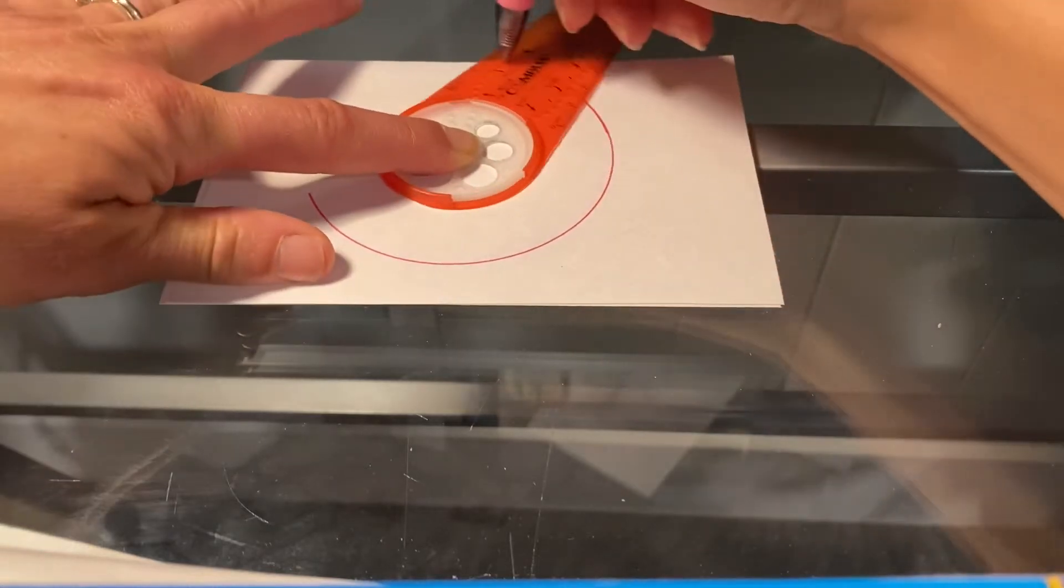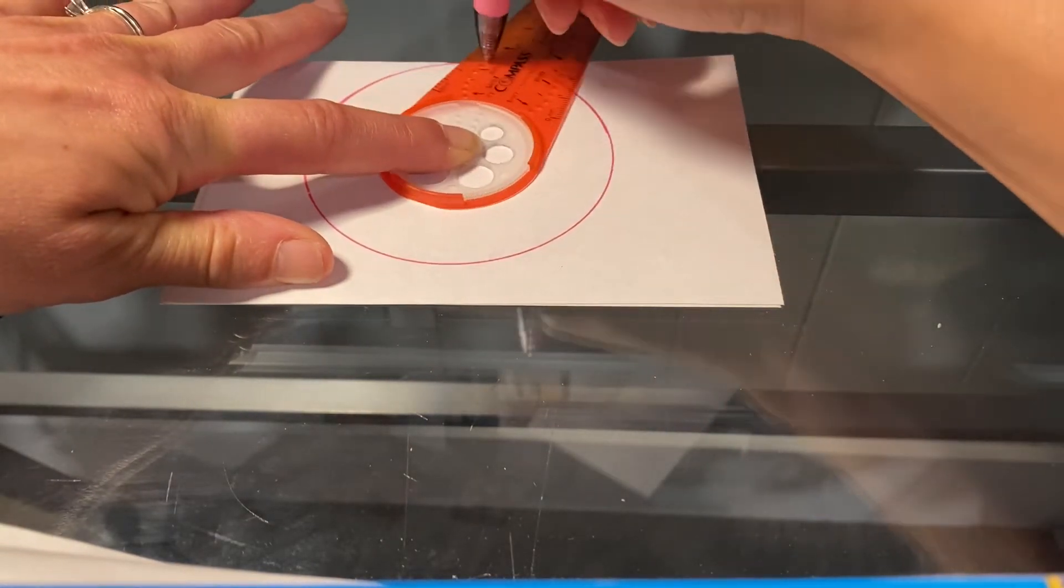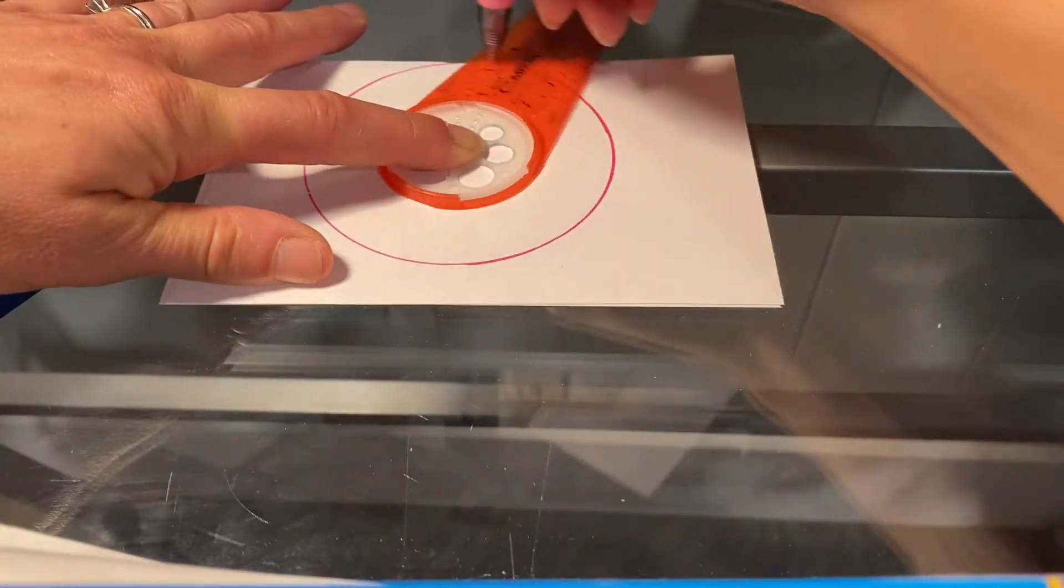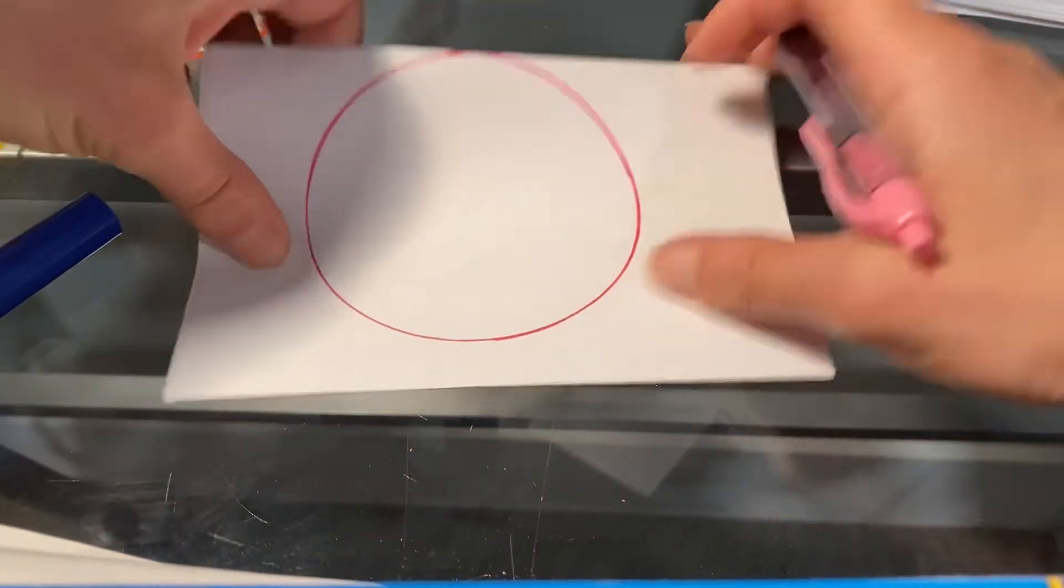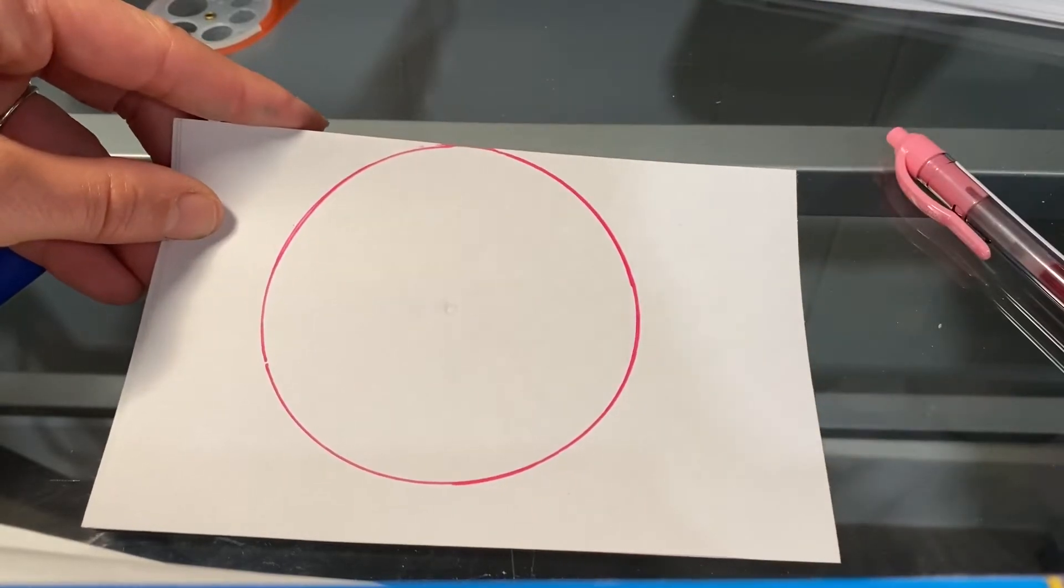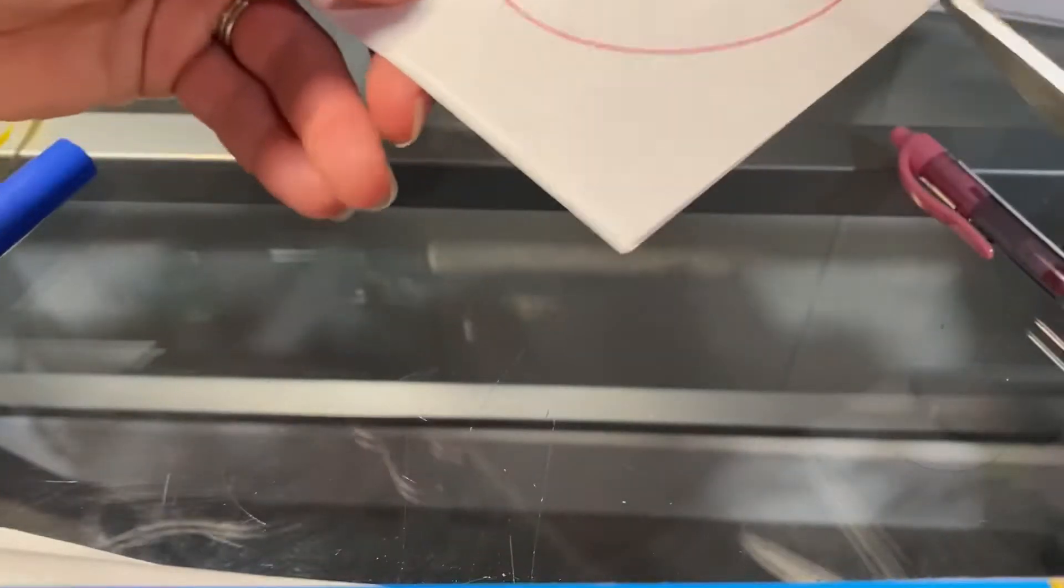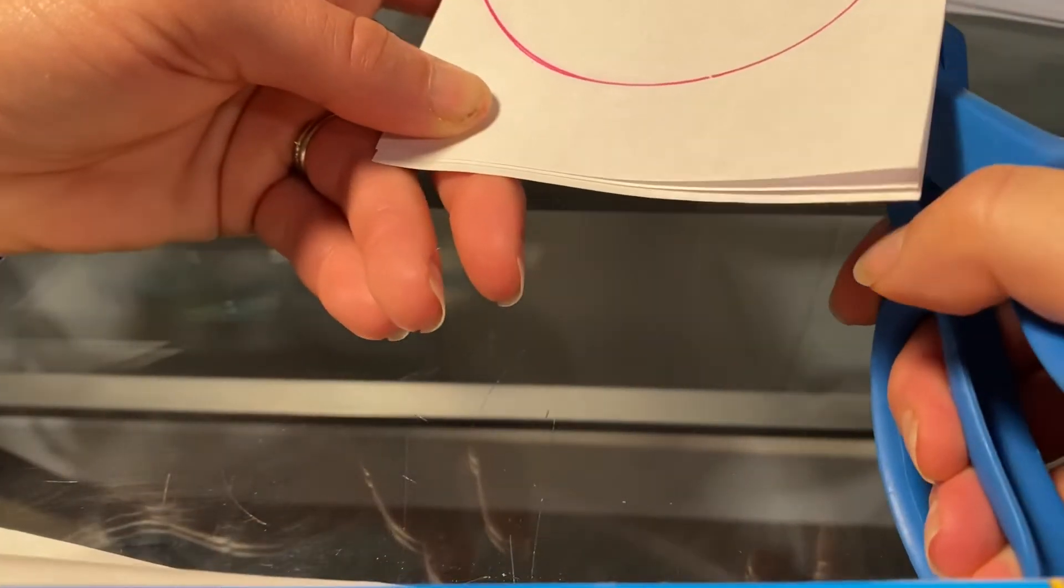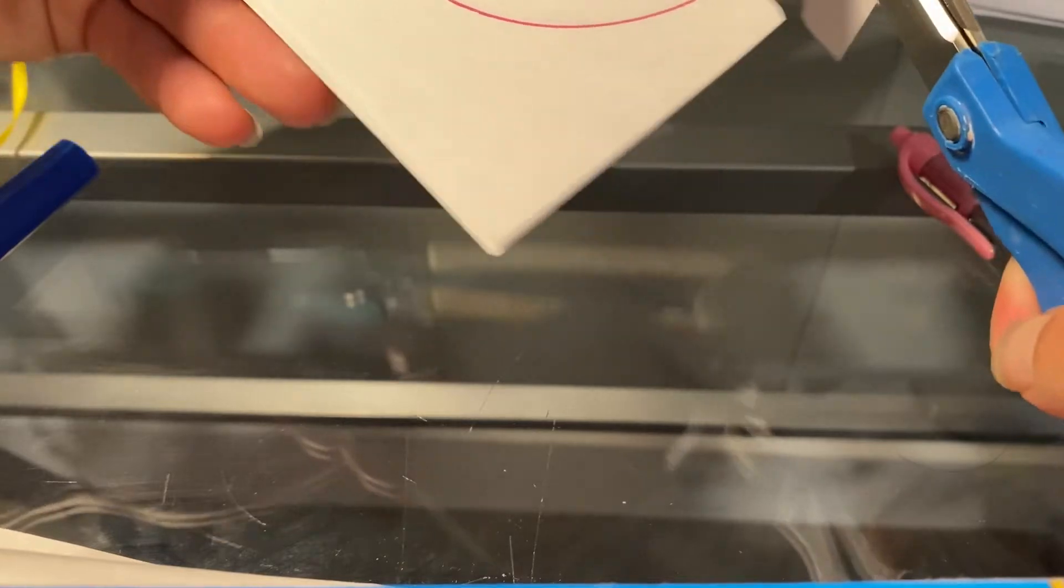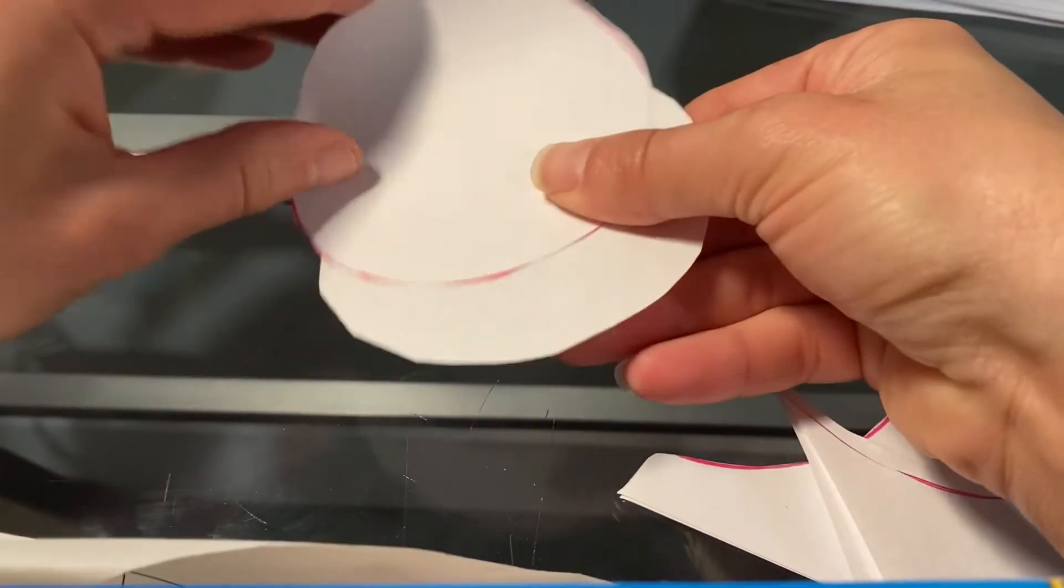All right, and around. Oh, mine's right at the edge of the paper. That's okay. There we go. As long as we make a circle. All right, next step, we're going to cut out the circle. All right, so I'm just going to cut.